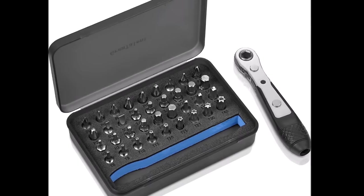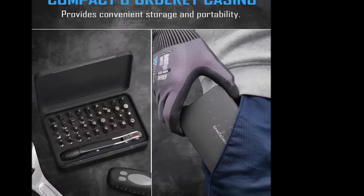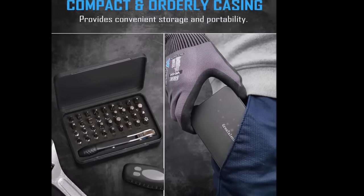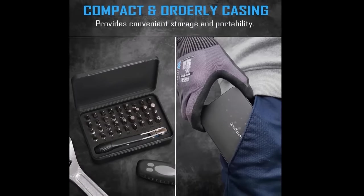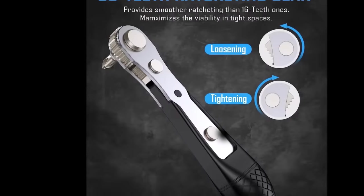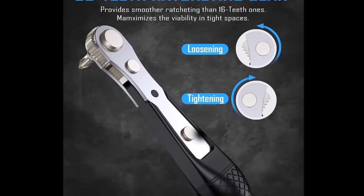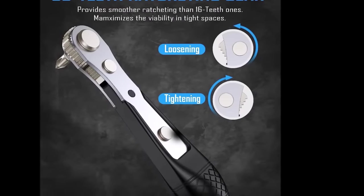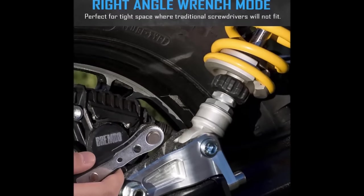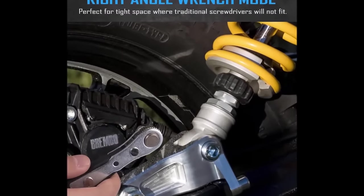Crafted from high-quality S2 steel and heat-treated for durability, the bits are built to withstand wear and tear. The kit includes essential components like a ratcheting handle for efficient screw and bolt operations, a magnetic bit holder for secure bit retention, and a 90-degree drive handle for accessing hard-to-reach areas.